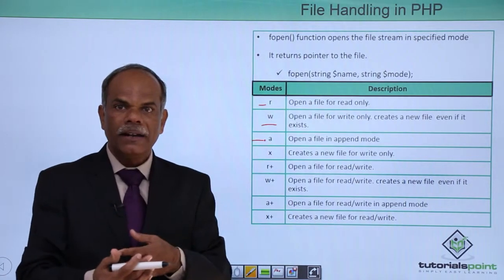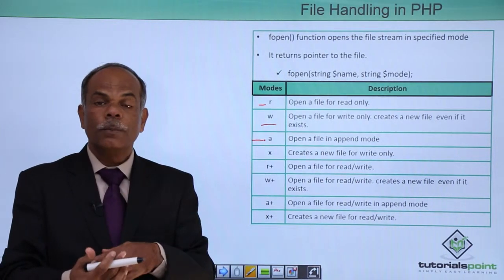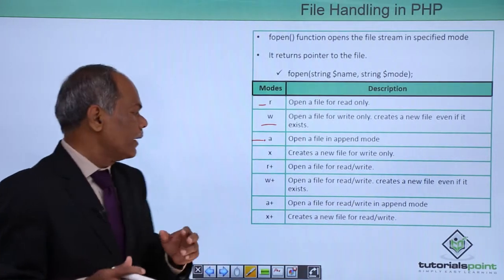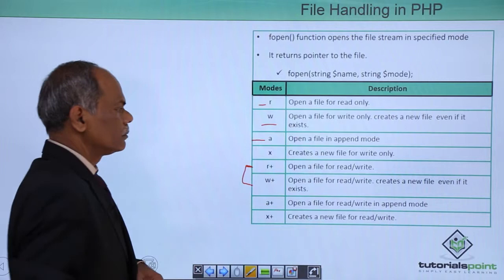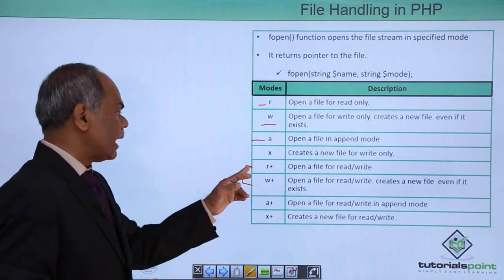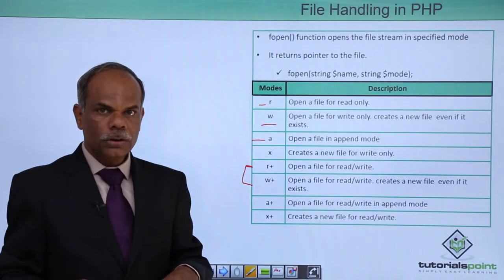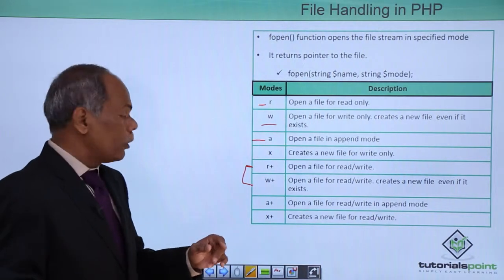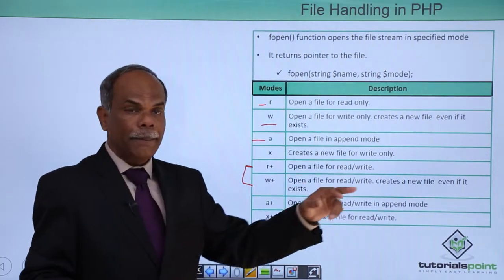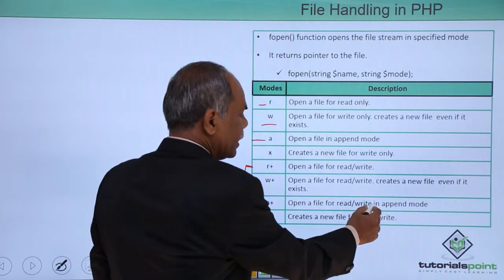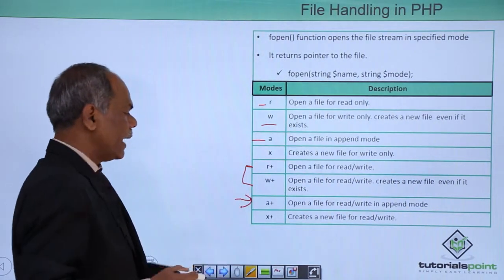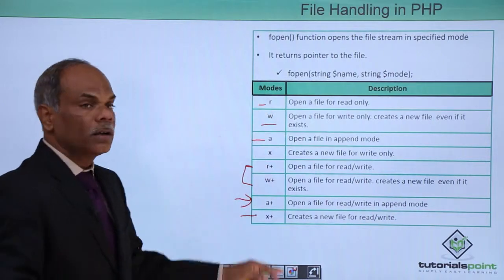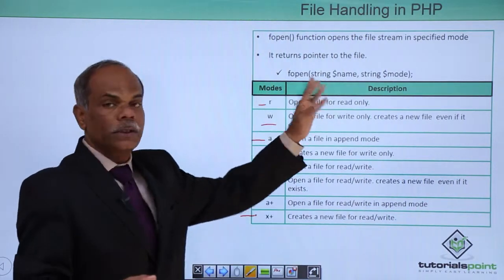Every now and then you will require a feature in which the file must be opened in read as well as write mode. If you want to perform both operations on a certain file, then these two modes are used. For read-write, you can either use r+ or w+; both modes will let you open the file in read and write mode. If you want to perform read-write in append mode, a+ is there, and x+ always creates a new file. So these are the different modes available for use with the fopen function.